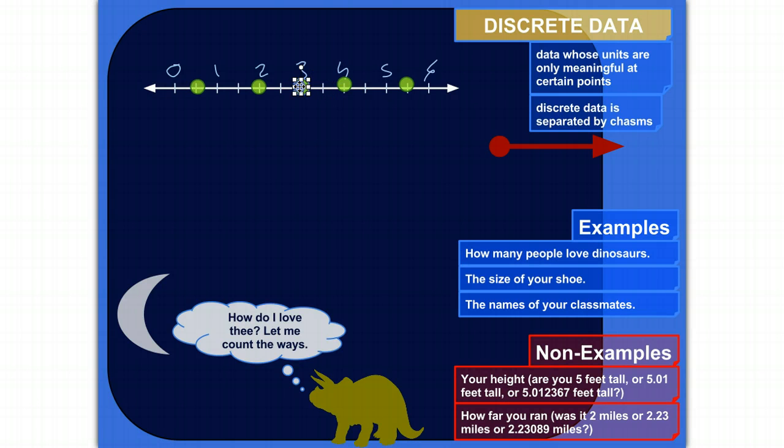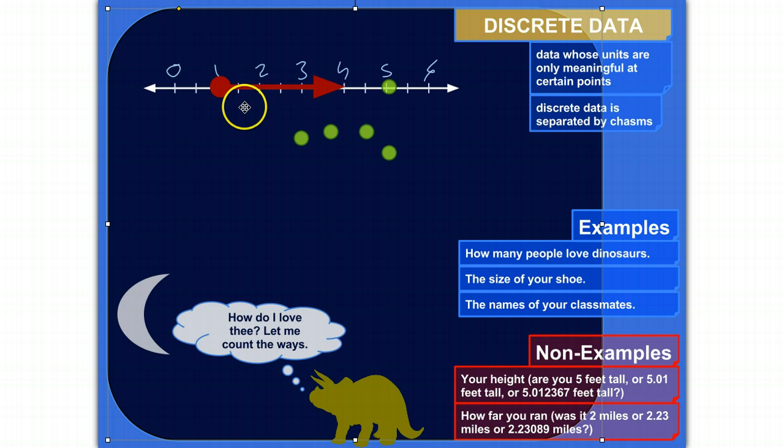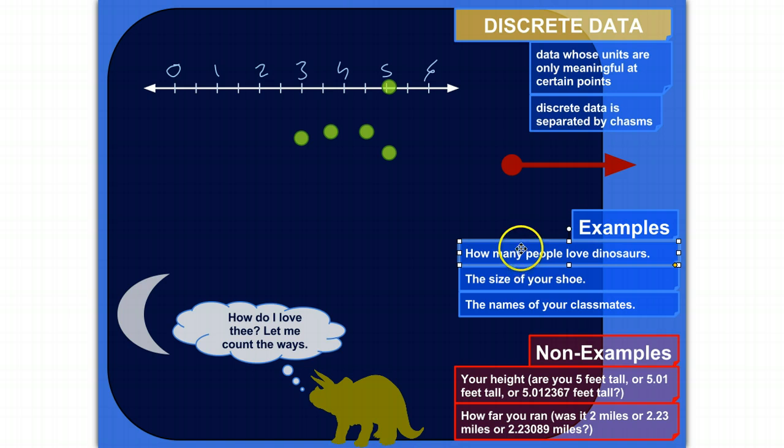So maybe it's something like five billion people love dinosaurs. I hope that's true. I hope nearly everyone loves dinosaurs. But you're never going to have 1.75 people love dinosaurs. That's a value that doesn't make sense for this unit, people. People would be the unit. You're counting people.